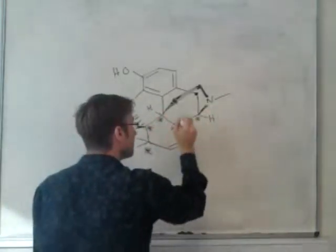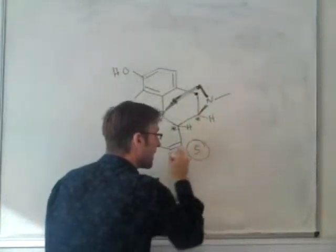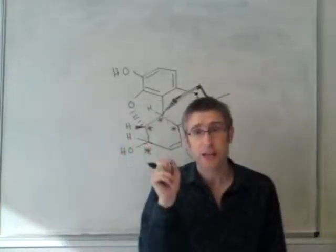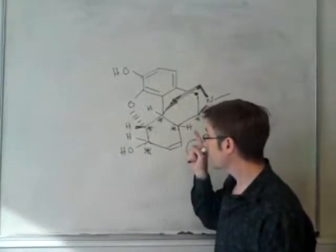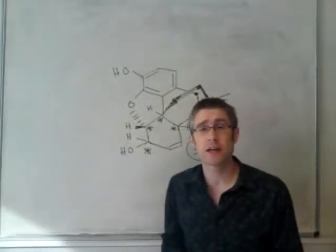One, two, three, four, five different chiral centres. And remarkably, the opium poppy makes this compound with all these chiral centres controlled.